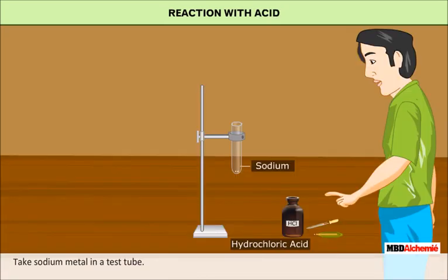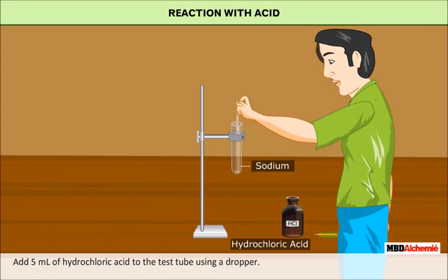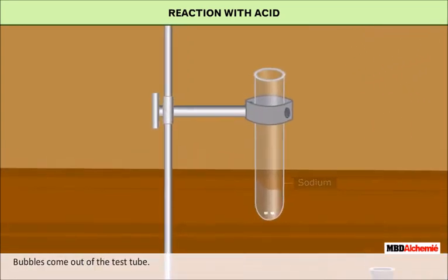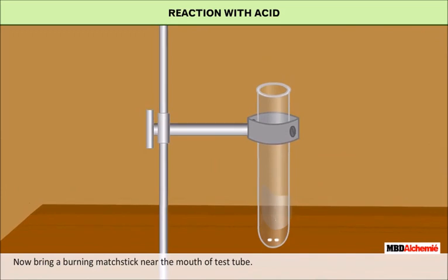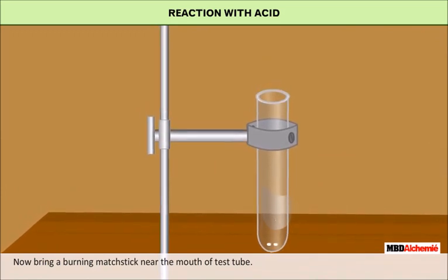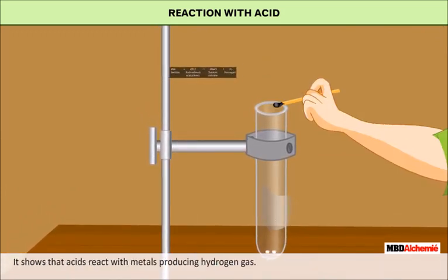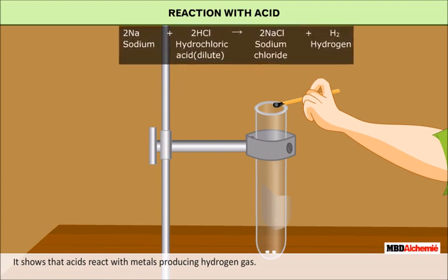Take a test tube containing a piece of sodium. Add 5 ml of dilute hydrochloric acid with the help of a dropper. Bubbles come out of the tube. Bring a burning matchstick near the mouth of the test tube — the gas burns with a pop sound. This shows that acids react with metals producing hydrogen gas.